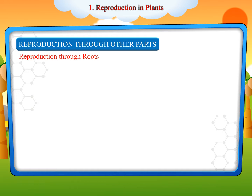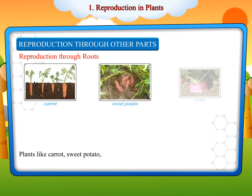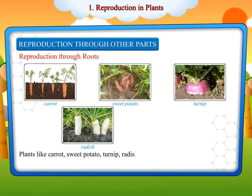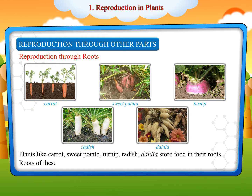Reproduction through roots: Plants like carrot, sweet potato, turnip, radish and dahlia store food in their roots. Roots of these plants can grow new plants.